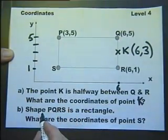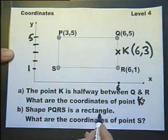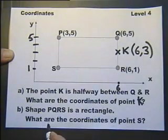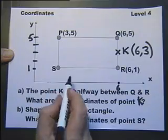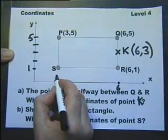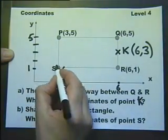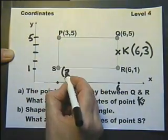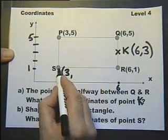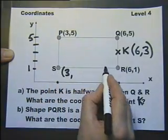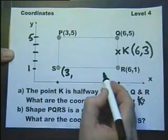The shape PQRS is a rectangle. What are the coordinates of the point S? Well, the X coordinate must be the same as the X coordinate for the point P. And the Y coordinate must be the same as the Y coordinate for the point R.